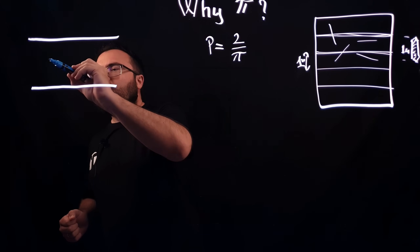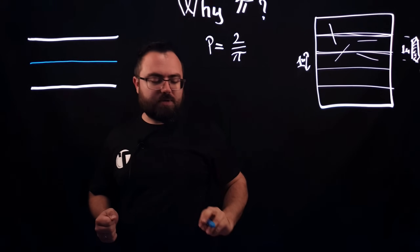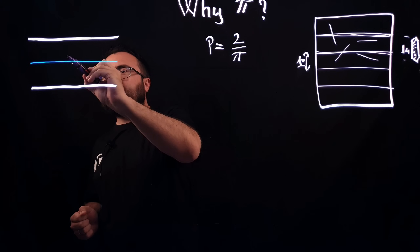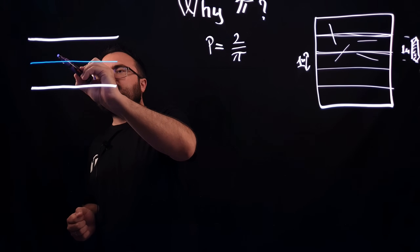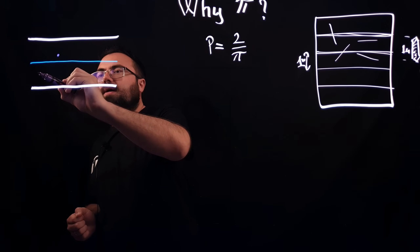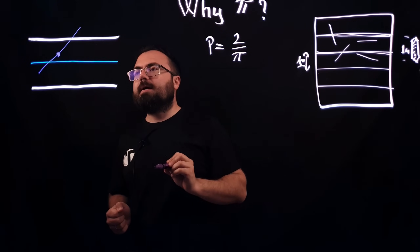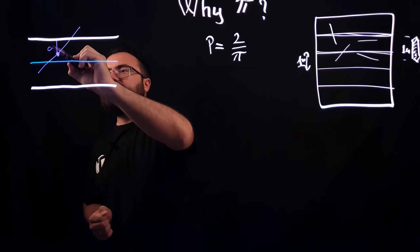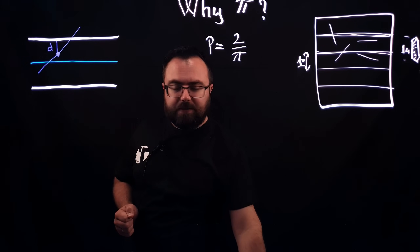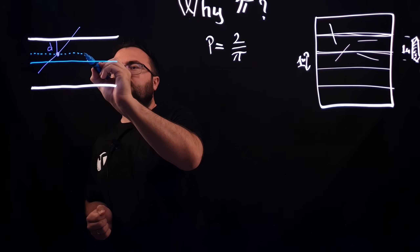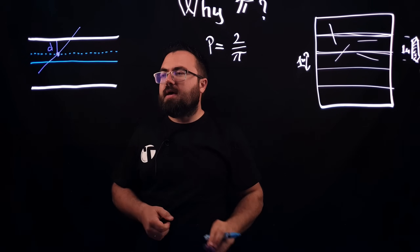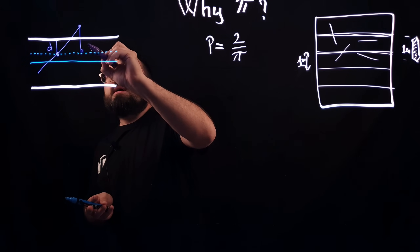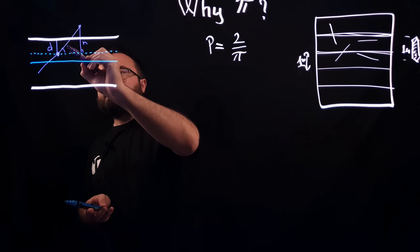We draw the middle line in between the two parallel lines. Let's assume the needle falls with its center on the upper side. We consider the distance between the center point and the upper line as D. We draw a line parallel to the middle that goes to the tip of the needle, and call the distance from the tipping point to the line H.